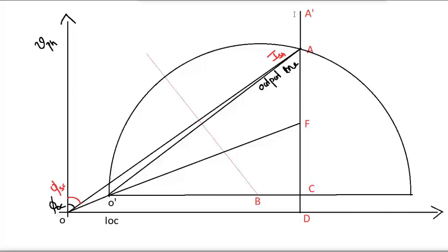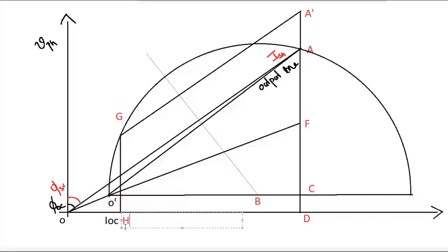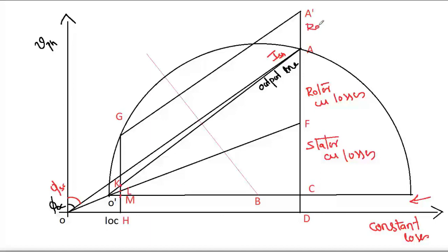From the end of A', draw a line parallel to the output line until it touches the curve. Let me name this point G. From point G, drop a perpendicular line to the x-axis, and let me name this point H. Let me also give names to the other important points: AF represents rotor copper loss, FC represents stator copper loss, and CD represents the constant loss. This is drawn based upon the rated output.